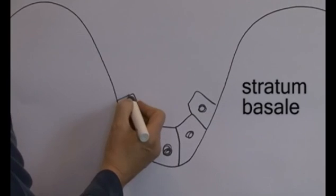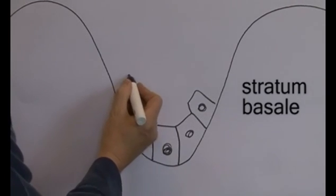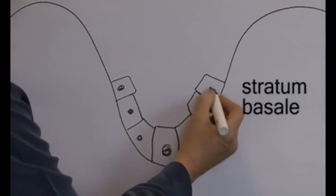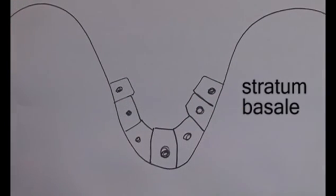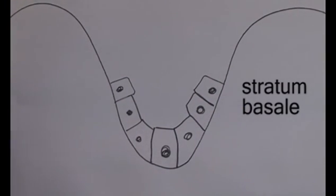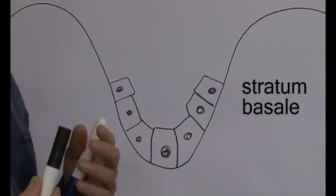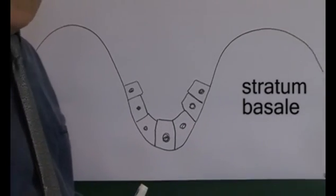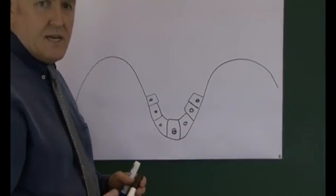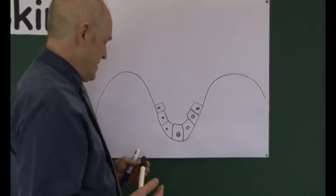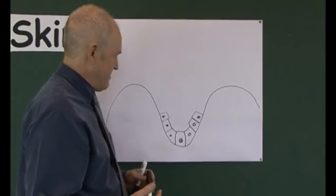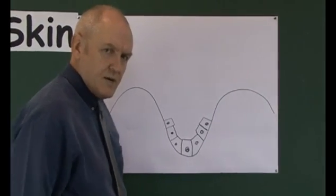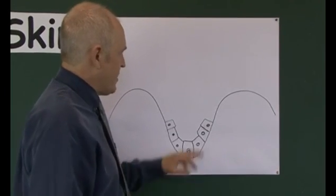The stratum basale follows around the basement membrane zone, with keratinocytes sitting just above it. But there are other cell types here as well — there's another type of cell called a melanocyte.